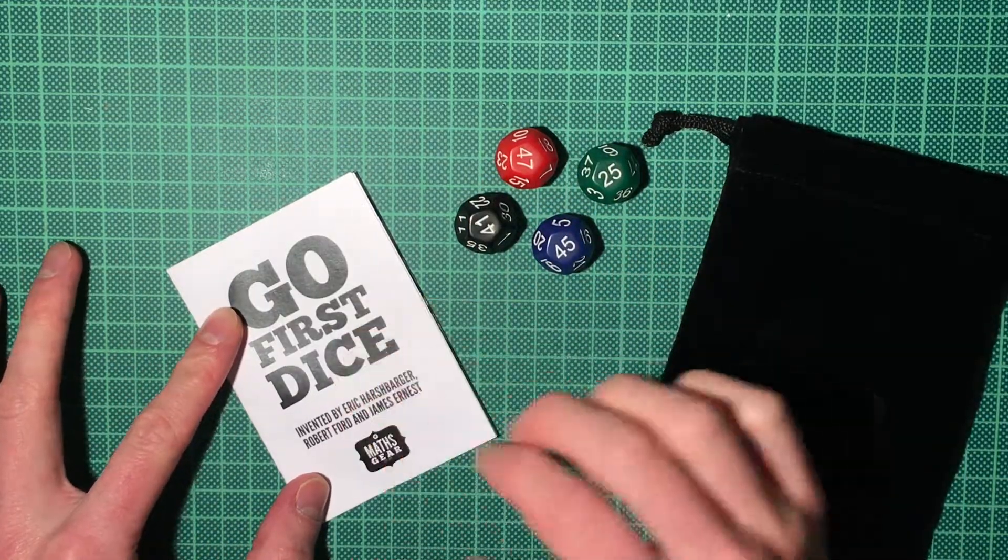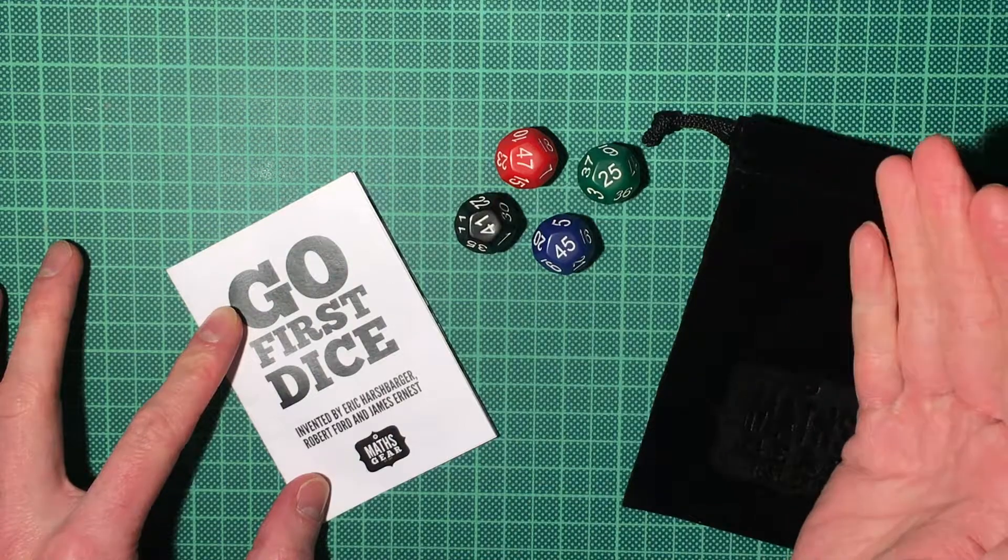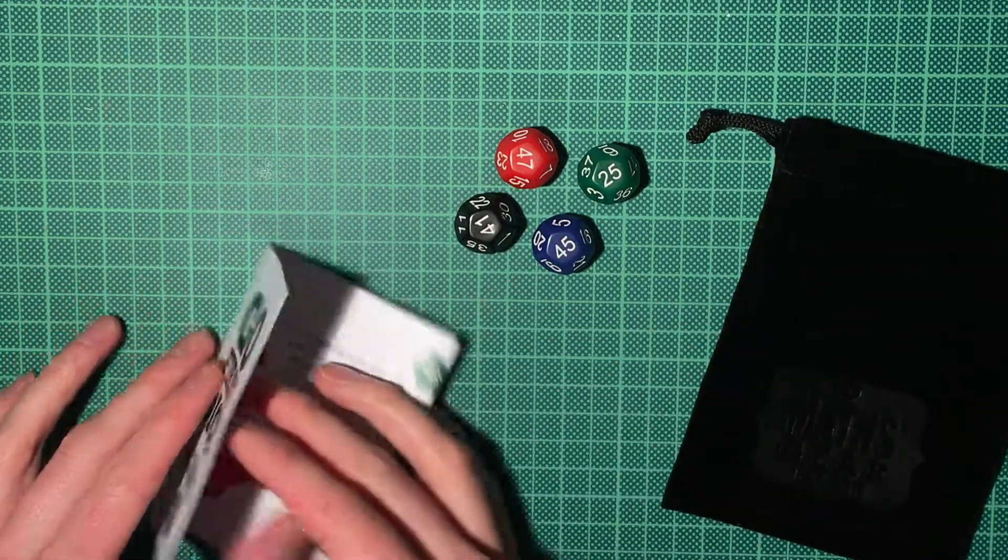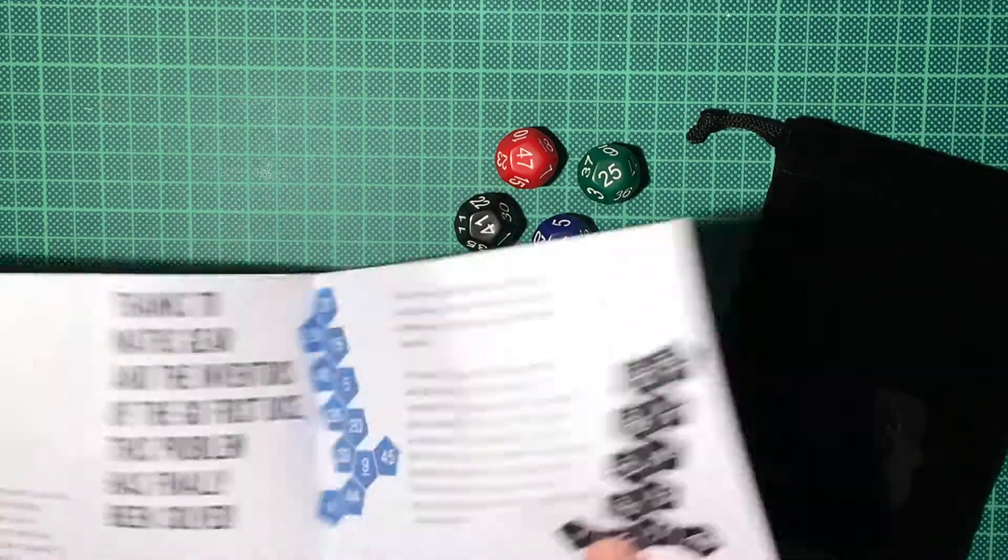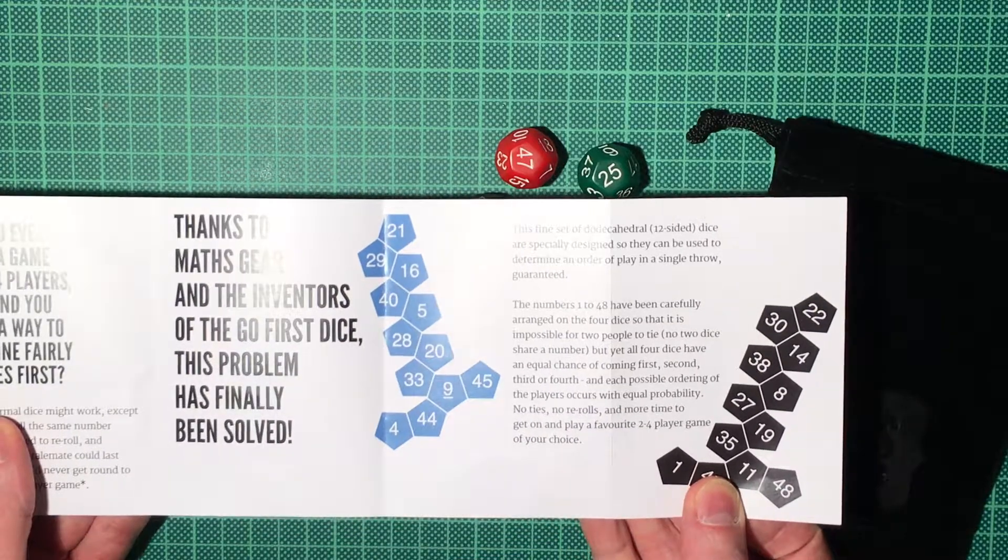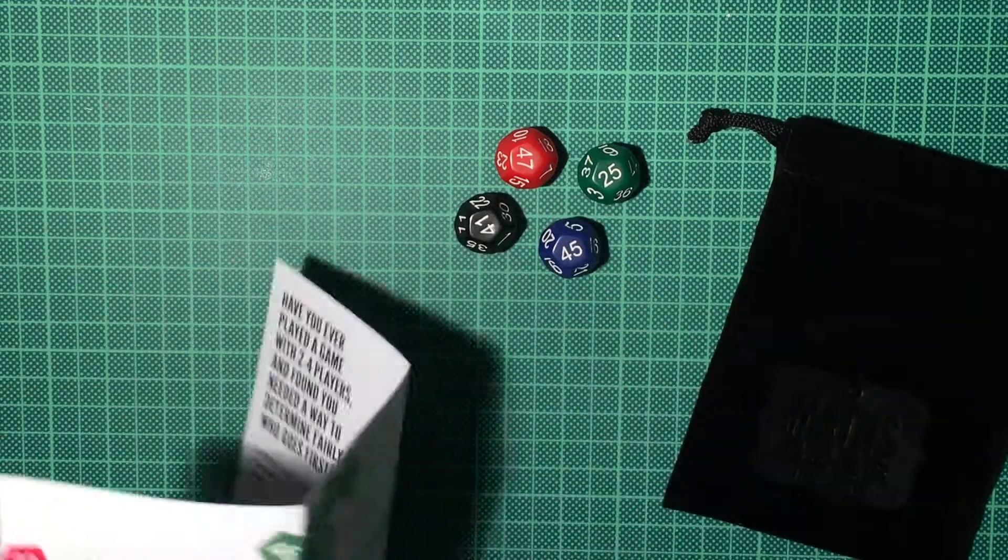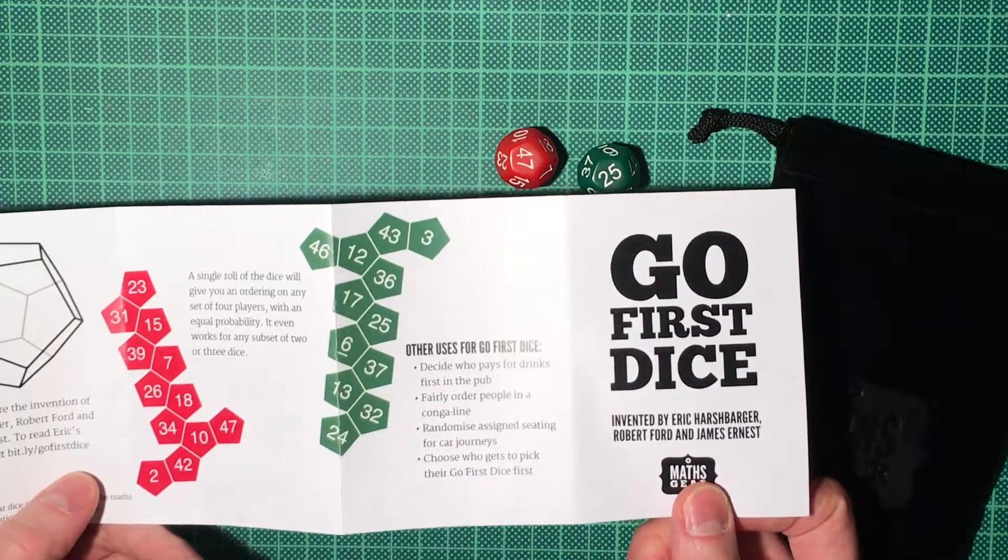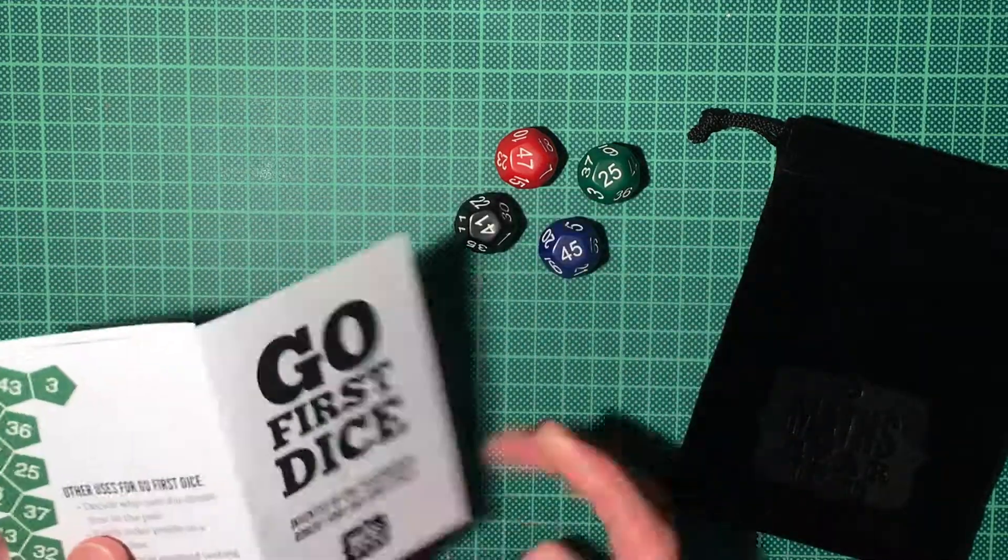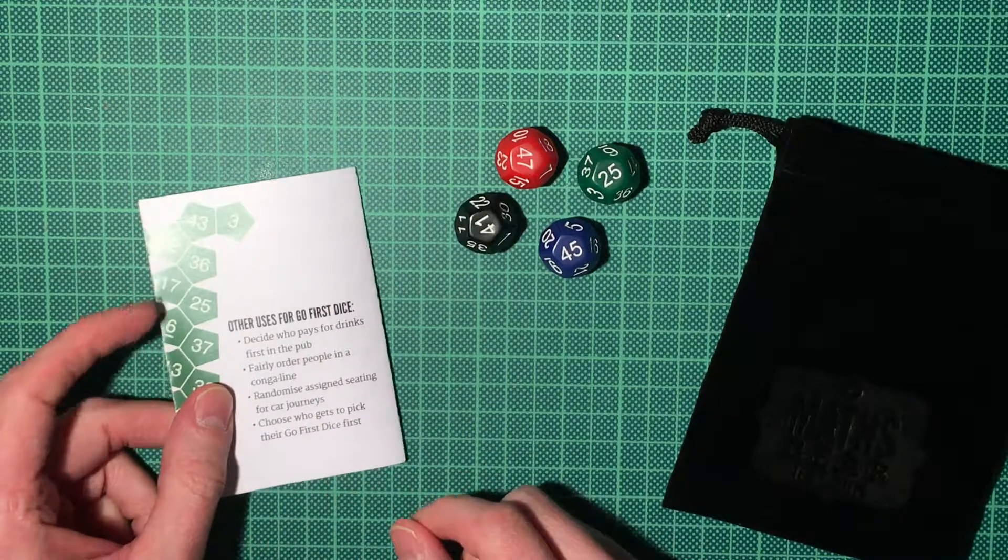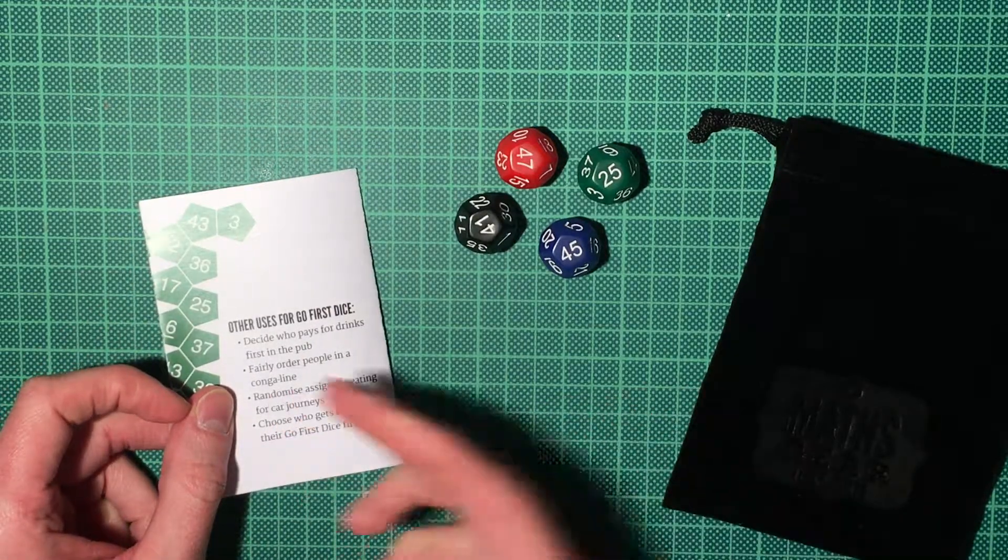They come with this nice little manual showing what the numbers on the dice are and explaining a bit about the background and ideas. What you can do with them: you can decide who pays for drinks first in the pub, you can fairly order people in the conga line, you can randomize assigned seating for car journeys.